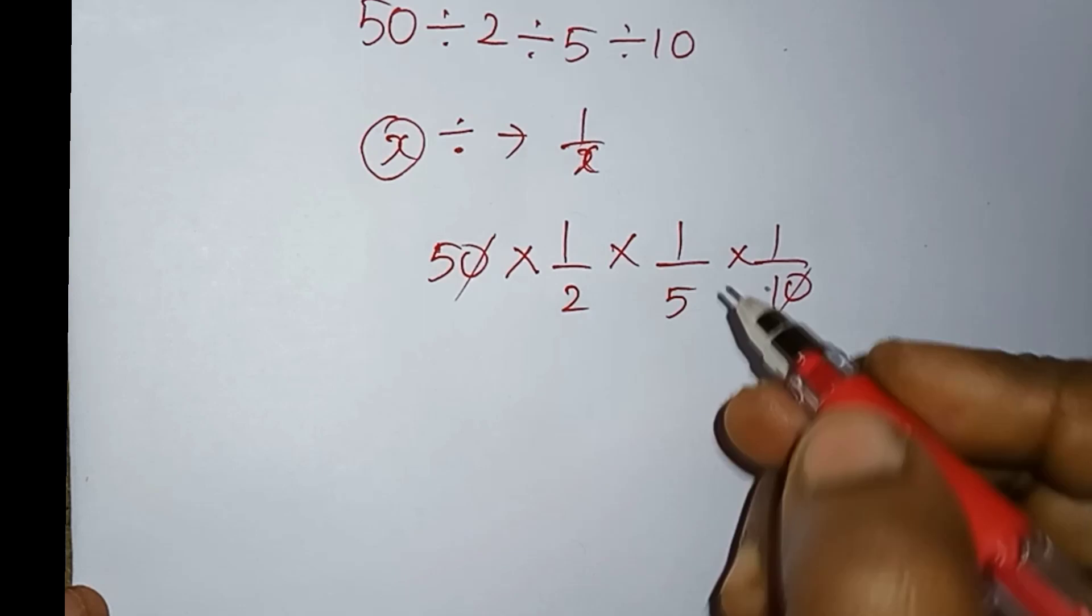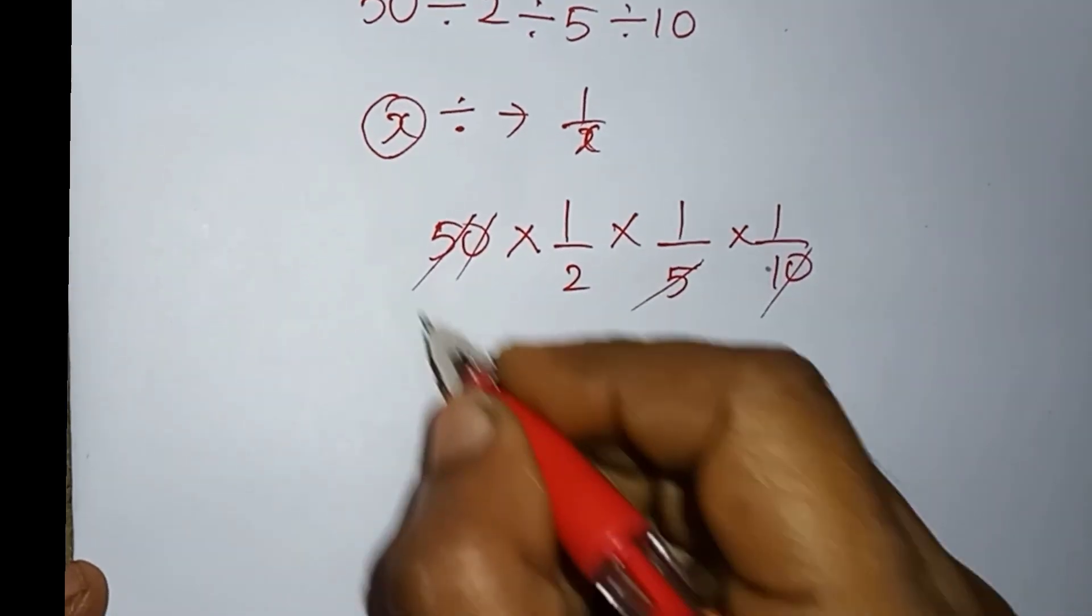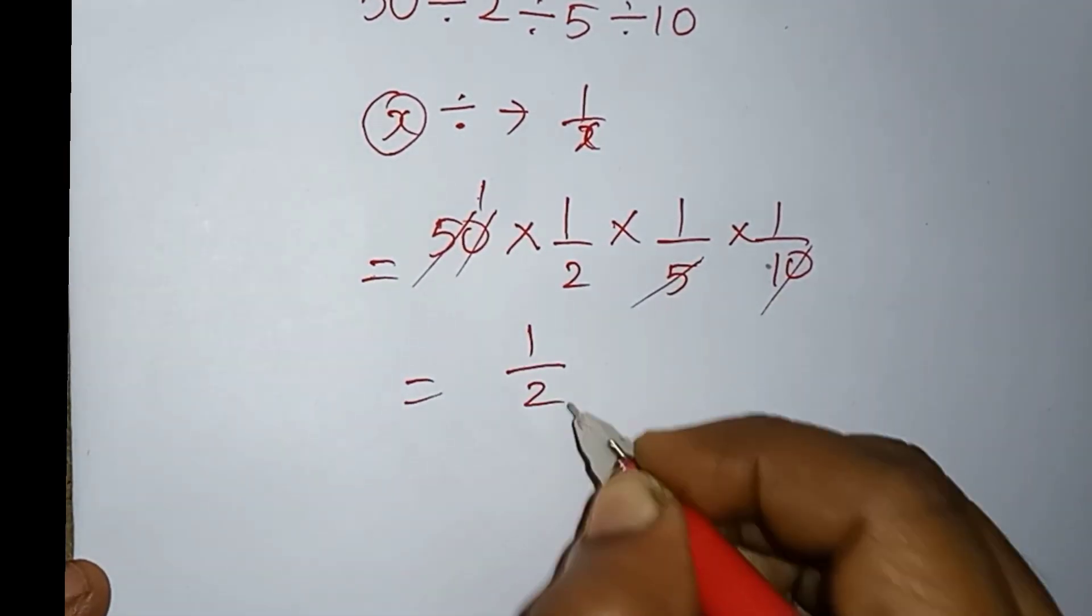If we cancel 50 and 10, then we cancel the 5 one time. What we have to do here is 1 and 1, so the answer is 1 by 2.